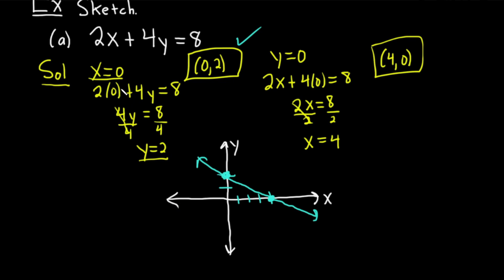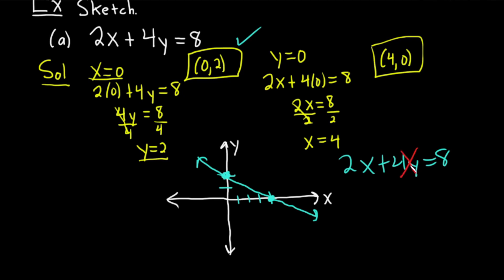You could almost do it in your head. You have 2x plus 4y equals 8. If x is 0, all of the x term is gone, so you get 4y equals 8, meaning y equals 2 — that gives you the first ordered pair. If y is 0, the y term is gone, so you get 2x equals 8, meaning x is 4 — that gives you the other ordered pair. You could do it in your head without showing any work, and that's what makes it such a powerful technique.